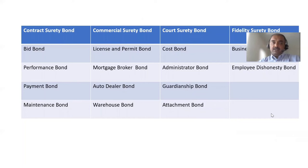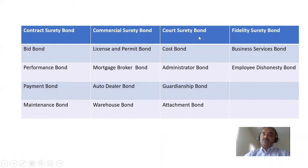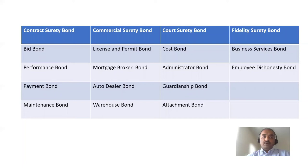There are multiple types of surety bonds: contract surety bond, commercial surety bond, court surety bond, and fidelity surety bond. I'm not going to touch each one in detail — at a high level, we can discuss what they are.